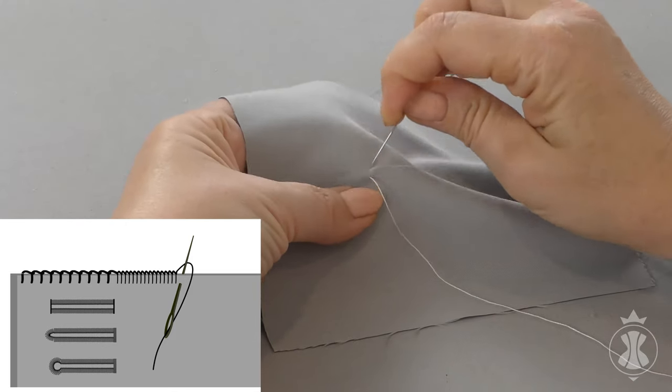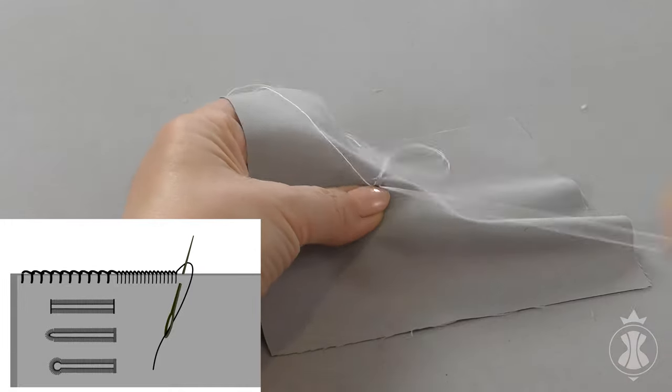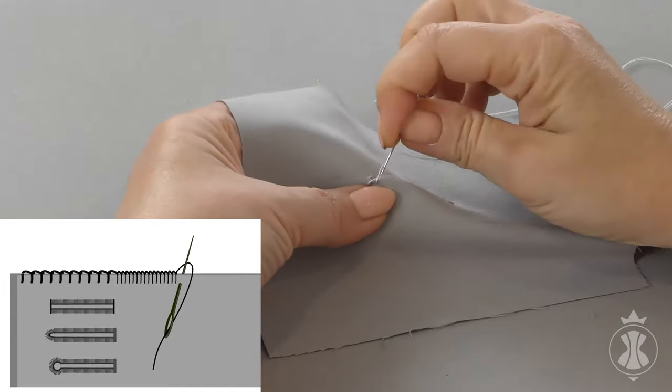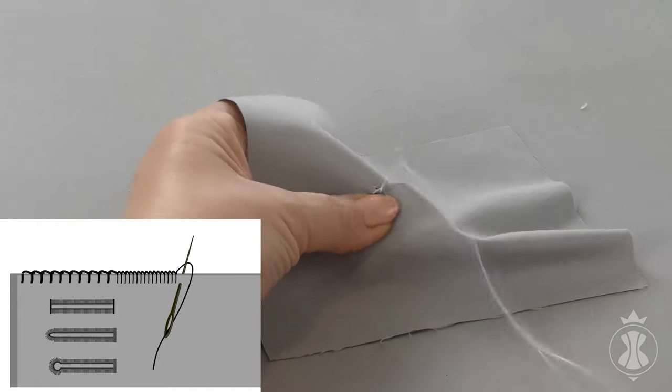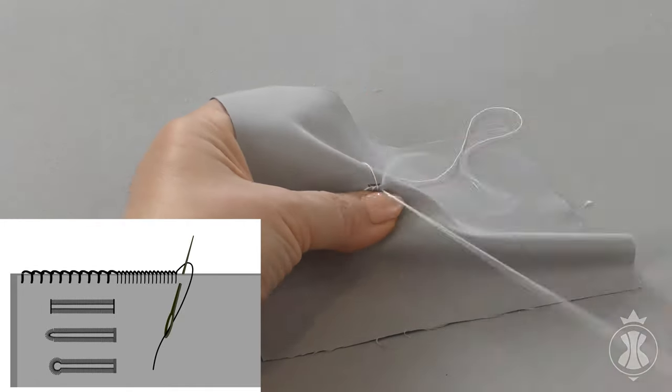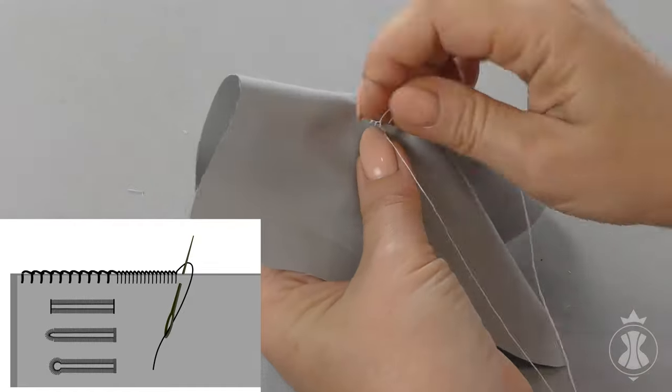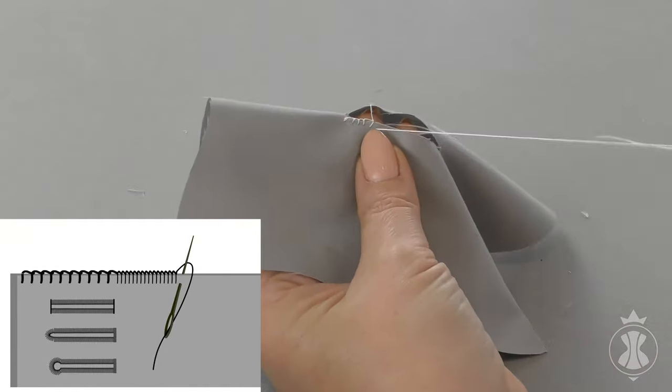This stitch is used for finishing buttonholes or seam allowances when it is impossible to use a serger, or when you want to have a decorative edge. The stitch length and spacing depends on a particular sewing purpose.